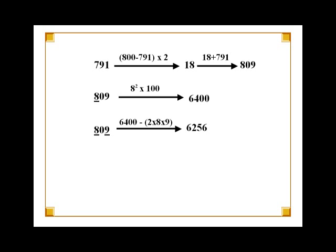In the next step, we multiply all non-zero digits in 809 with each other and then multiply the result with 2. So, on multiplying 9 with 8 we get 72 and multiplying 72 with 2 gives us 144. Now we subtract 144 from 6400.